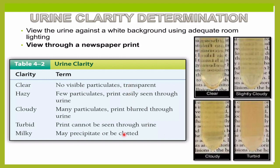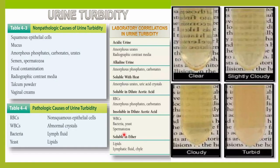And that is how we grade the clarity of the urine. Now yeh jo clarity hai, this could be ya toh because of certain non-pathological causes which might be causing urine turbidity, ya toh there might be some pathological causes which might be causing urine turbidity.